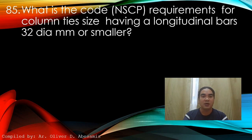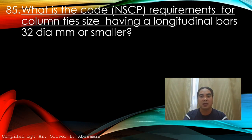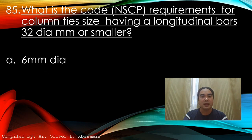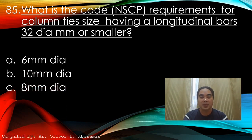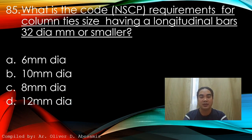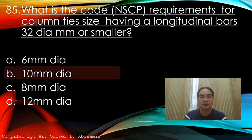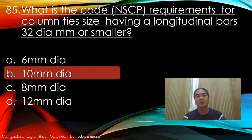Question 85: What is the code requirement for column tie size having longitudinal bars 32mm diameter or smaller? A) 6mm diameter, B) 10mm diameter, C) 8mm diameter, D) 12mm diameter. Answer: B) 10mm diameter.